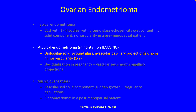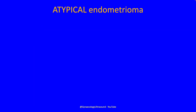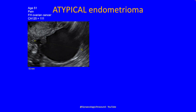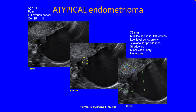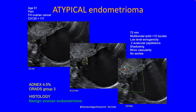Atypical endometriomas are in the minority, and on imaging these have been described as unilocular solid with ground-glass echogenicity, avascular papillary projections, with no or minor vascularity. This patient was 51, presented with pain, a family history of ovarian cancer, and a raised CA125. She had a 72 millimetre cyst with two locules, a small solid component, low-level echogenicity, avascular papillation, and no ascites. On ADNEX risk scoring this came out at 4.5%, ORADS group 3, and histology confirmed a benign ovarian endometrioma — another example of an atypical endometrioma.